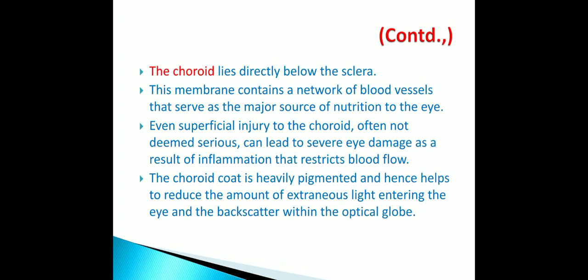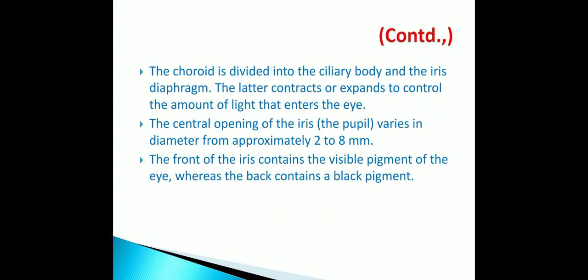Even a superficial injury to the choroid can lead to severe eye damage due to inflammation that restricts blood flow. The choroid coat is heavily pigmented and helps reduce the amount of extraneous light entering the eye and backscatter within the optical globe. The choroid is divided into the ciliary body and the iris, which is a diaphragm that contracts or expands to control the amount of light entering the eye. The central opening of the iris — the pupil — varies in diameter from approximately 2 to 8 mm.